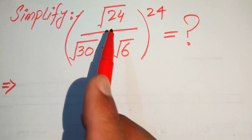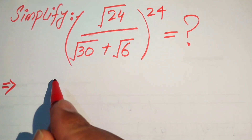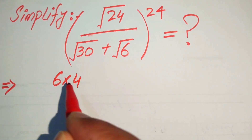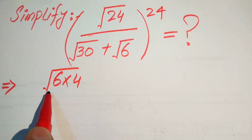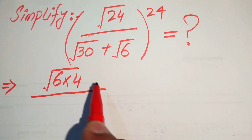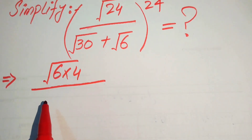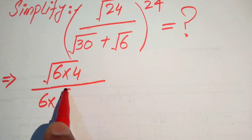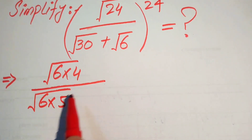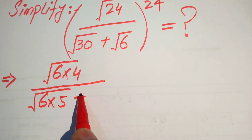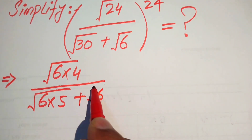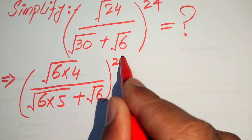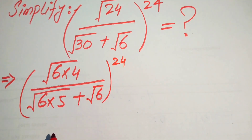The very first step is to write these into simplified form. We write 24 as 6 times 4 under the square root, divided by 30 written as 6 times 5 under the square root, plus square root of 6, and the whole thing is raised to the power of 24.